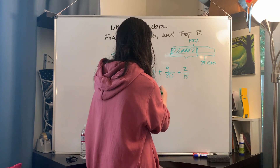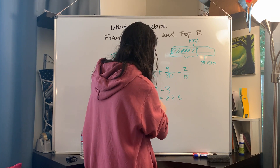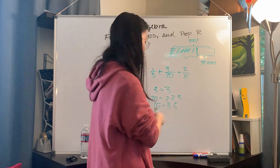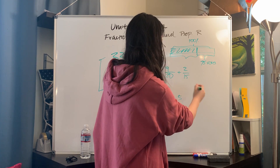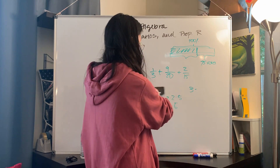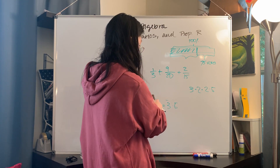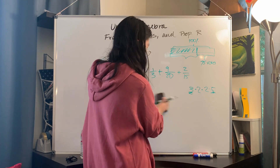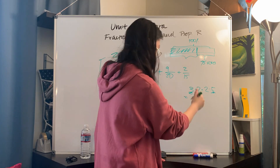To find the LCM, we factorize: 3 is equal to 3; 20 is equal to 2 times 2 times 5; 15 is equal to 3 times 5. The least common multiple has to have at least one of all of these factors. It must have a 3 to be divisible by 3, and 2 times 2 times 5 to be divisible by 20. This is already divisible by 15 because there's a 3 and a 5.